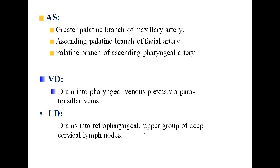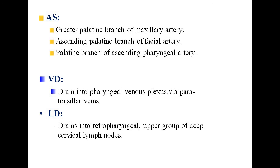Arterial supply of the soft palate: it is supplied by the greater palatine branches of the maxillary artery, the ascending palatine artery (branch of the facial artery), and the pharyngeal artery. Venous drainage: the whole soft palate drains into the pharyngeal venous plexus via paratonsillar veins. Lymphatic drainage: it drains into the retropharyngeal and upper deep cervical lymph nodes.